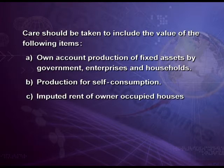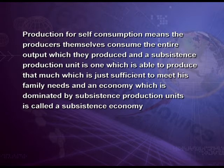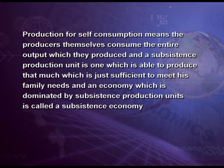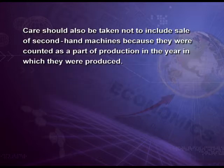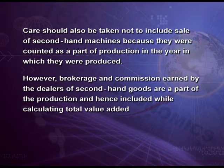Care should also be taken to include imputed rent of owner-occupied houses. Production for self-consumption means the producers themselves consume the entire output they produced. A subsistence production unit is one which produces only just sufficient to meet family needs, and an economy dominated by subsistence production units is called a subsistence economy. Care should also be taken not to include sale of second-hand machines, because they were counted as part of production in the year they were produced. However, brokerage and commission earned by dealers of second-hand goods are part of production and hence included while calculating total value added.